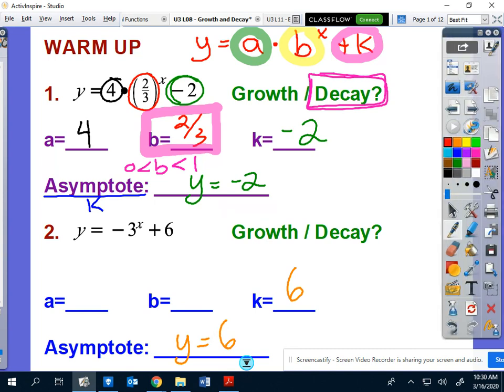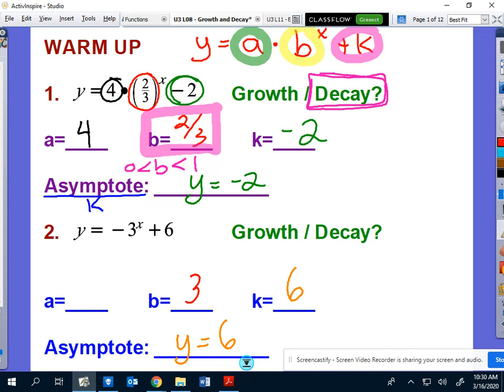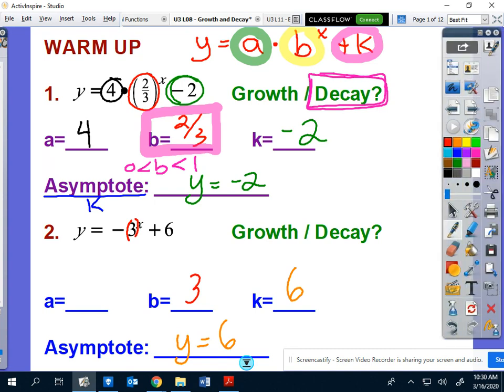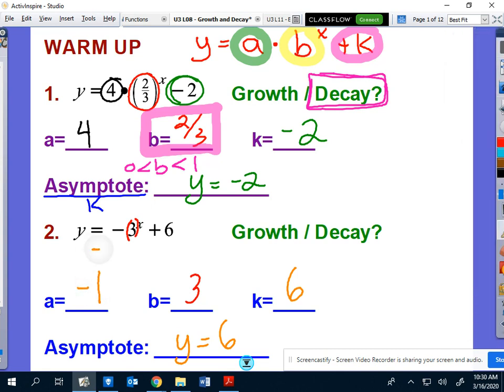My b value here, you might make the mistake of thinking that your b value is negative three. It's not negative three. It's only positive three, because the negative isn't being raised to the x power. Just the positive three is. So then that means, what is my a value? My a value is technically negative one. If you were to rewrite this equation, it would be negative one times three to the x power plus six. So your a value is that invisible negative one right there.